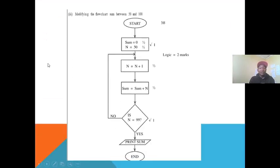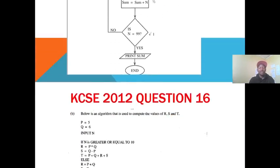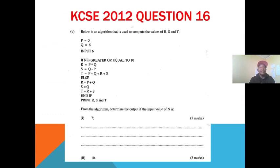To modify the flowchart to find the sum from 50 to 100, it would look like: Sum = 0; N = 50; then the increment N = N+1; then Sum = Sum + N; then the condition is N equal to 99; if false, loop back. That's how the modification will look. Now let's go to the 2022 Question 16.